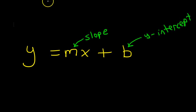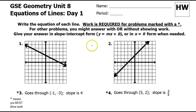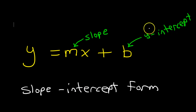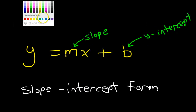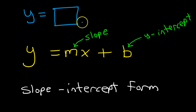That's why this form is called the slope-intercept form. So keeping this in mind, these are the two things that we need in order to write the equation of a line. We need the slope, and we need the y-intercept. Think of it this way: y is equal to mx plus b.